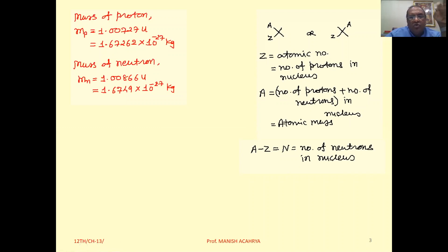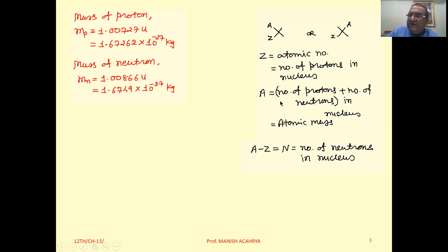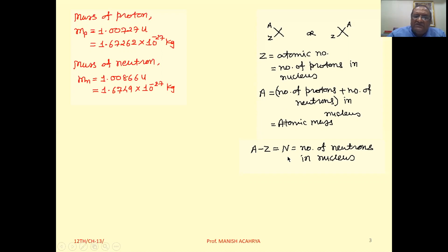If you take A minus Z, that gives you the number of neutrons in the nucleus, denoted capital N. Symbolically, the nucleus of any element X is represented as ᴬ_Z X, where Z is the atomic number (number of protons) and A is the atomic mass number (total nucleons = protons + neutrons). So N = A − Z is the number of neutrons.